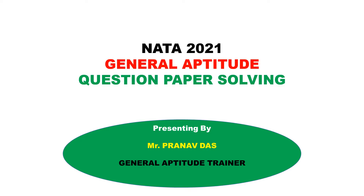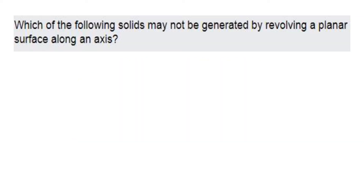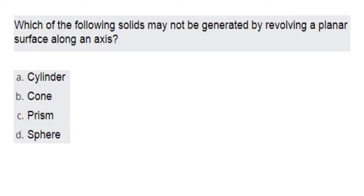When we have NATA 2021: which of the following solids may not be generated by revolving a planar surface along the axis? Options are: cylinder, cone, prism, sphere.